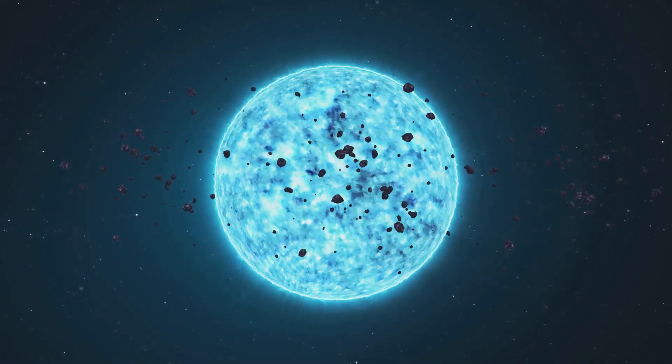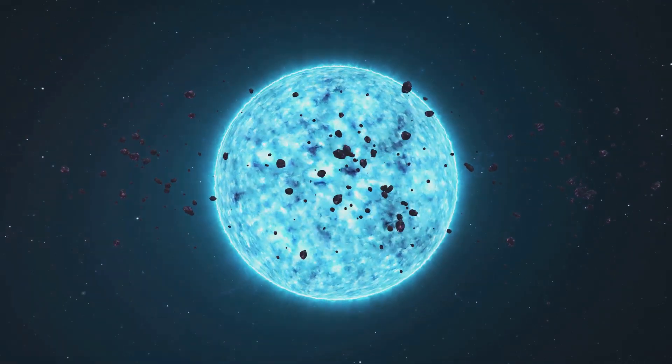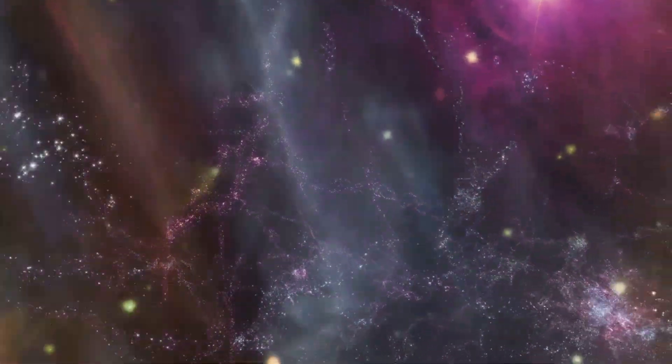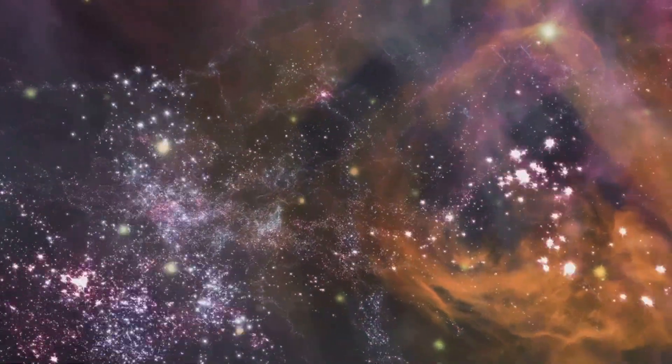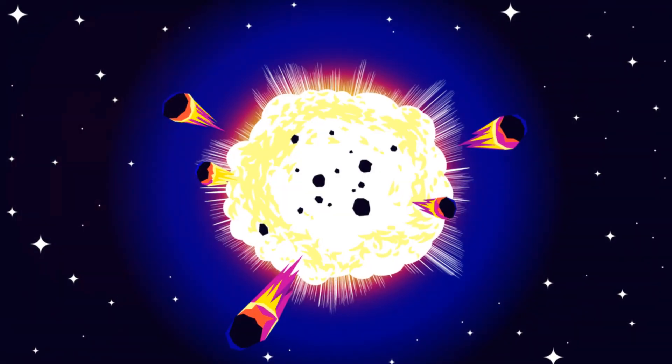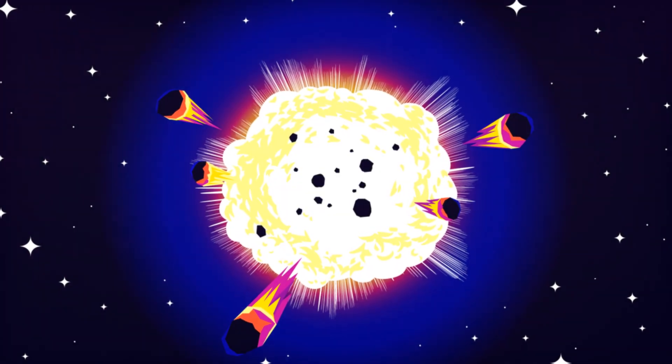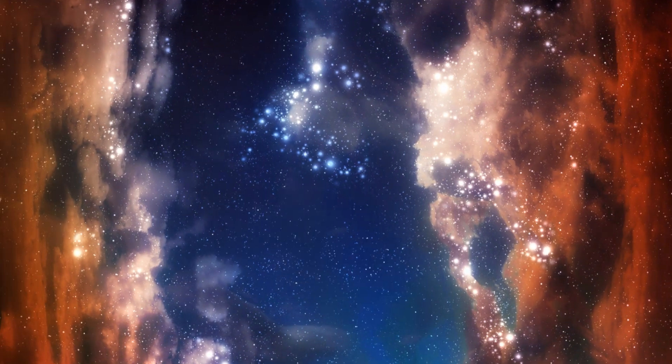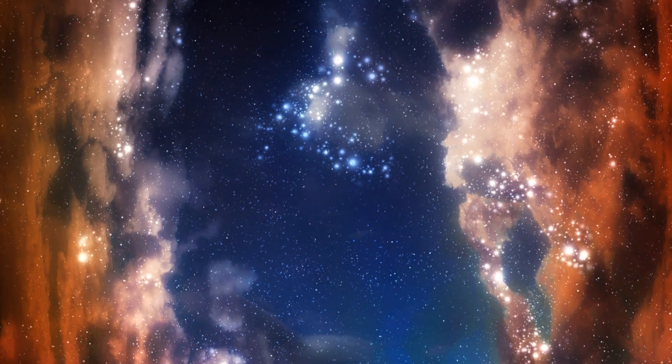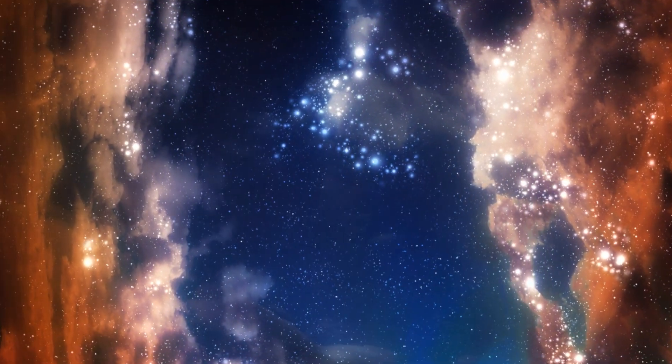Our own sun and solar system are products of this ongoing cycle. We are the beneficiaries of billions of years of cosmic evolution, and our future is intertwined with the fate of the stars. When the sun eventually exhausts its nuclear fuel, it too will die, scattering its own collection of elements into the cosmos, potentially contributing to the formation of new stars and planets.